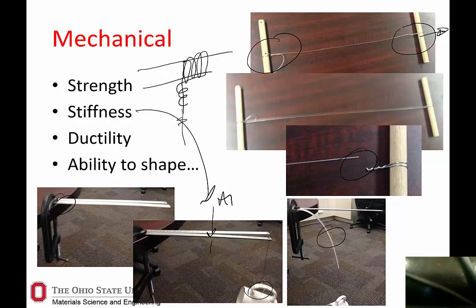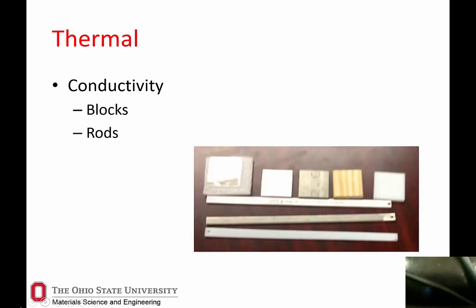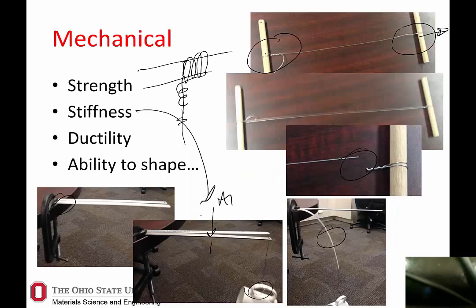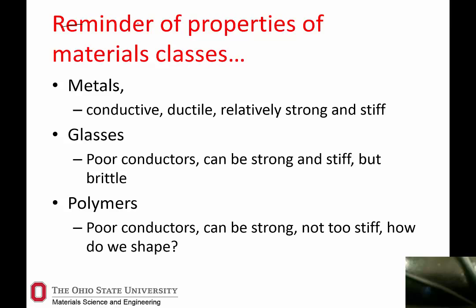Thermal conductivity is a great one: hold one end of a sample at a given temperature and look at the temperature distribution with a FLIR camera, or put ice cubes on top of each material and see how long they last. Again, you can get real numbers or just rank things. Different material classes generally behave differently: metals are conductive with respect to temperature and electricity, ductile, strong, and relatively stiff. Glasses are poor conductors, can be strong, but are brittle — be careful, protect yourself. Polymers are generally poor conductors, can be strong, but are usually not very stiff.